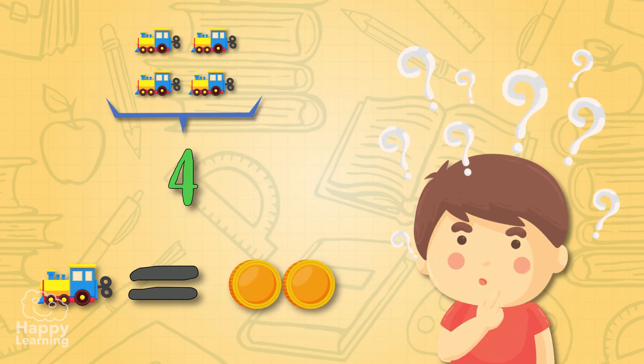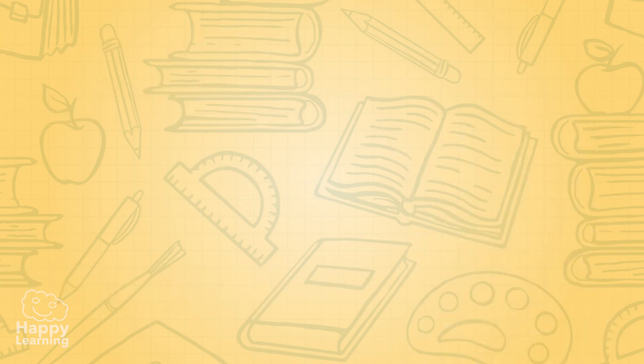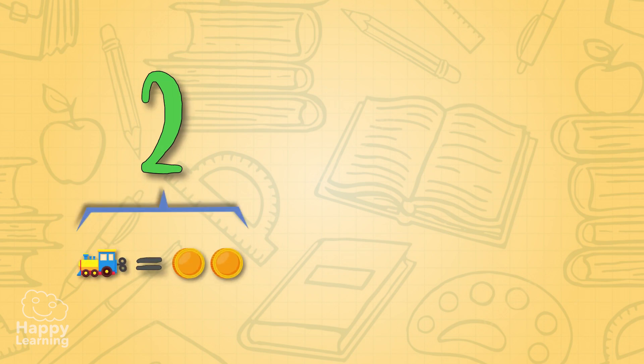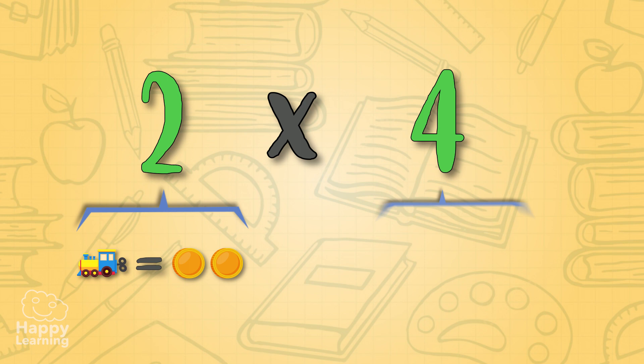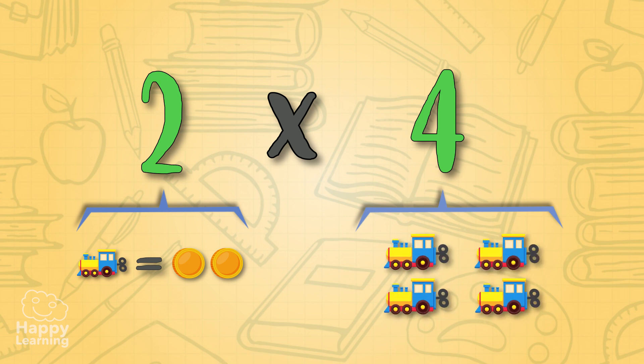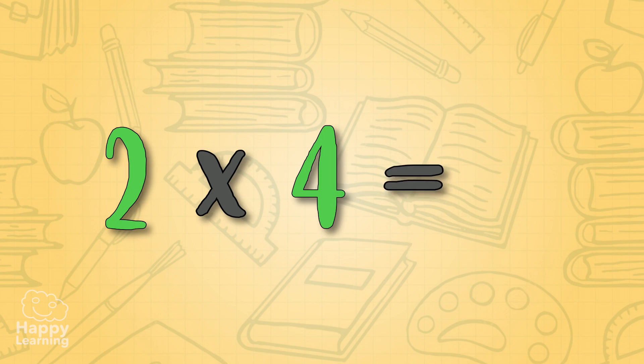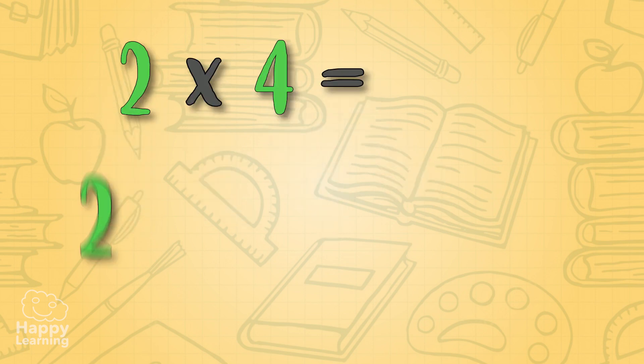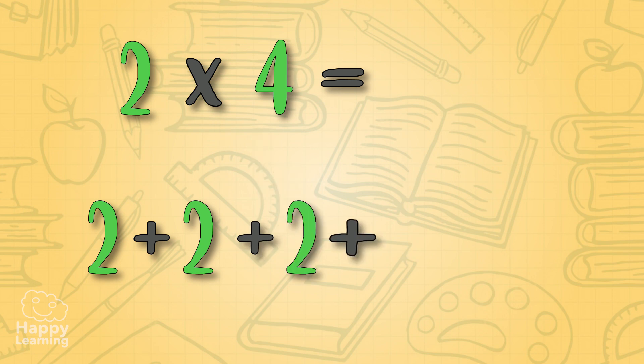It's easy peasy. We would have to write two, the number of coins for each toy, times four, which is the amount of toys we want to buy. This means we need to add four times number two: two coins from one toy plus two coins from another toy plus two from another and two from the last. Our answer is eight.